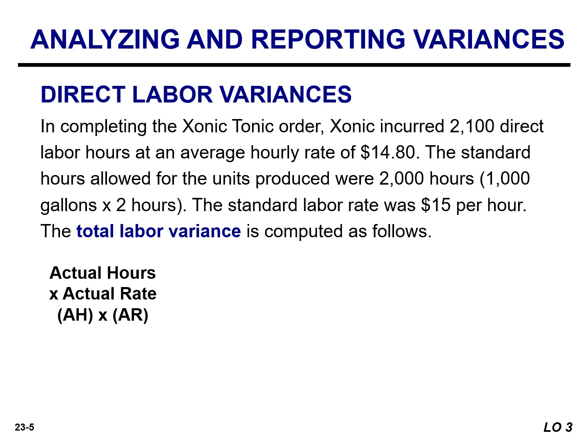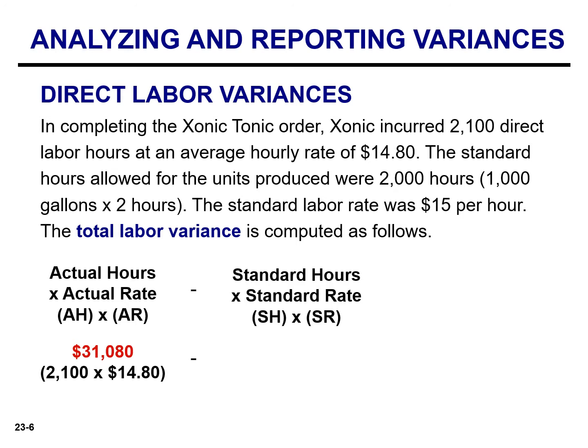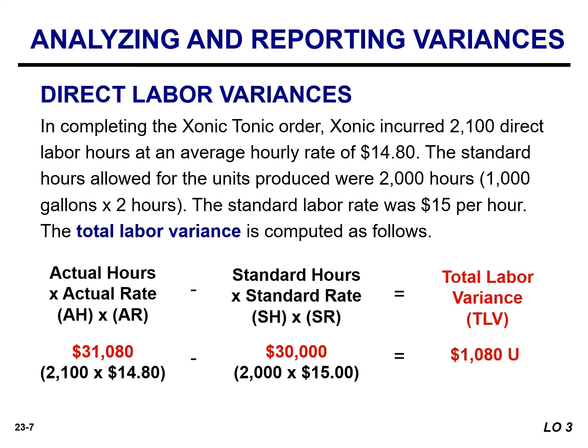The total labor variance is calculated as the difference between the amount actually paid for labor — actual hours of 2,100 times the actual rate of $14.80 — and the amount that should have been paid, which is $30,000. That is the standard hours of 2,000 — since each unit requires two direct labor hours and we produced 1,000 gallons — multiplied by the standard rate of $15. The total labor variance is $1,080, and it is unfavorable because the actual labor costs exceed our standard cost.